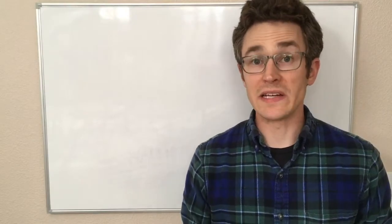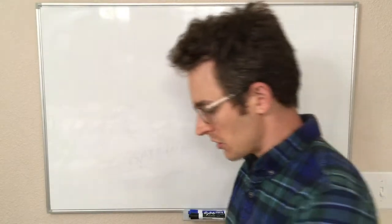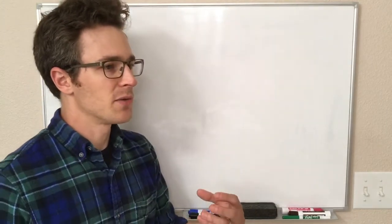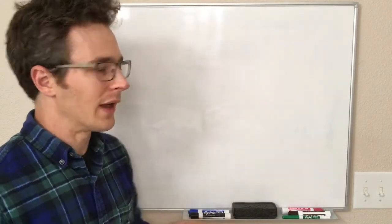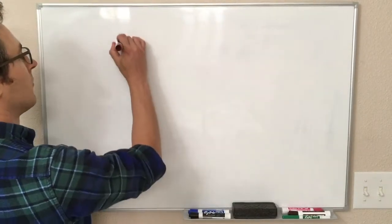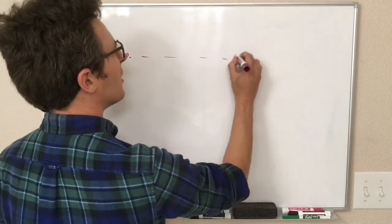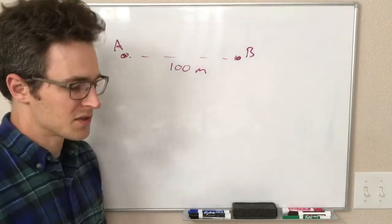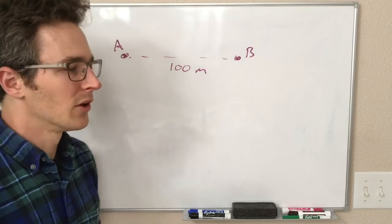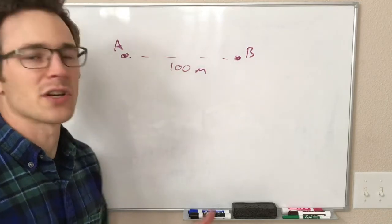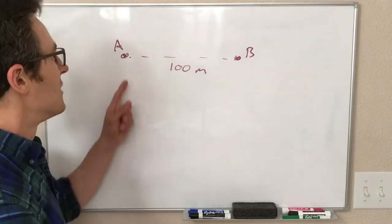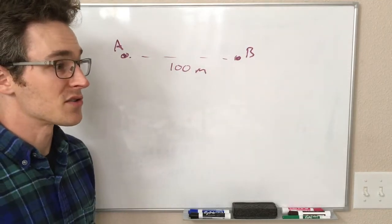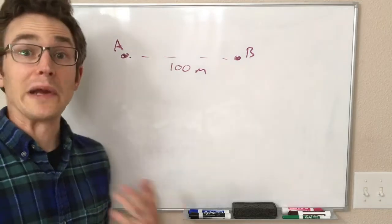So let's talk now about the rates that these values can change. For an example, let's say I have an object that starts at point A here and ends at point B here, and this distance is 100 meters. So that's approximately the length of a football field, no matter which kind of football you like.